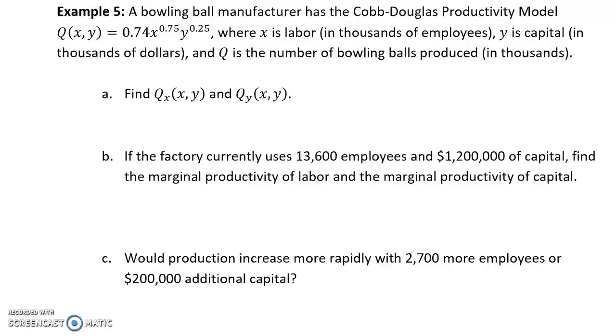In example five, we have a bowling ball manufacturer with a Cobb-Douglas productivity model, where x is labor in thousands, y is capital in thousands, and Q is the number of bowling balls produced, again, in thousands. We can start off by finding our two partial derivatives, first our partial derivative with respect to x, and then our partial derivative with respect to y.